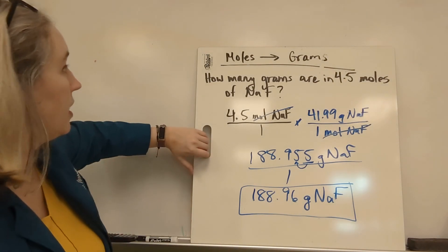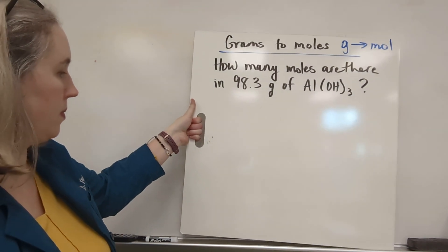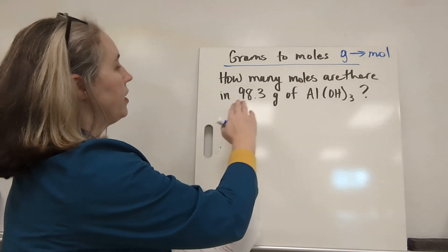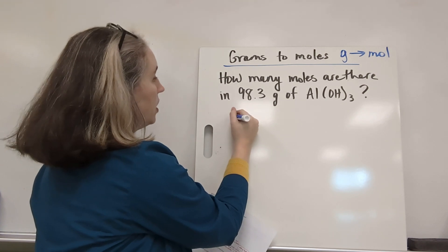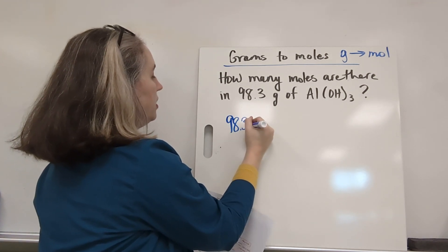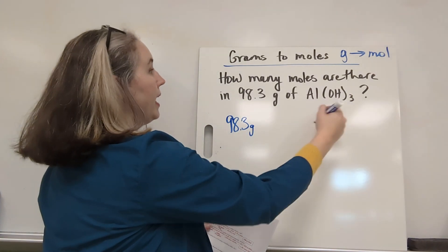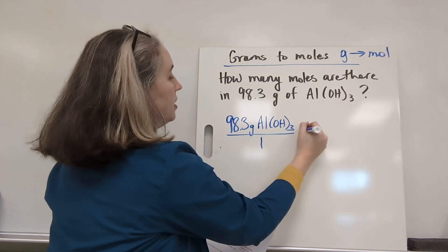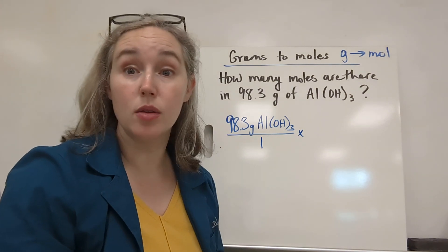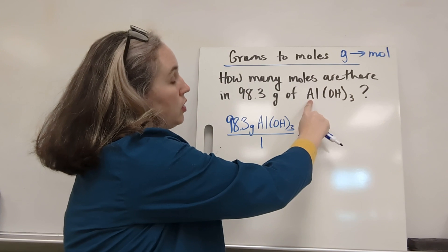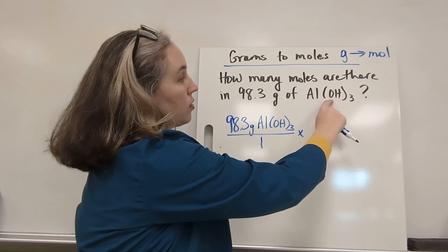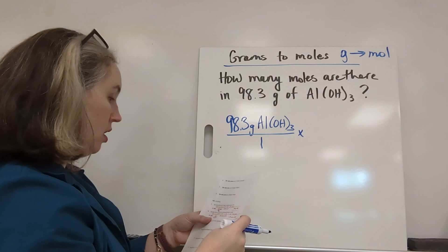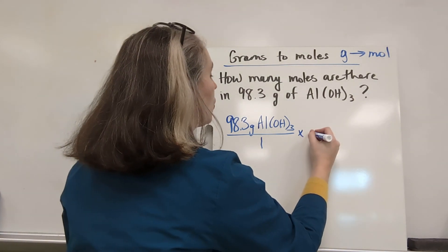Next, let's turn grams to moles. Similar process, not exactly the same. How many moles are there in 98.3 grams of aluminum hydroxide? So take what we know and put it over 1. 98.3 grams of Al(OH)3. Yes, you have to write Al(OH)3 every time. We'll take 1 over 1. Then calculate the molar mass of aluminum hydroxide. We'll take 1 aluminum plus the molar mass of 3 oxygens and 3 hydrogens and add it all together. And that's going to give us 78.01 grams per mole.